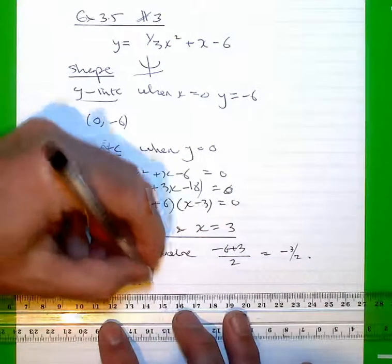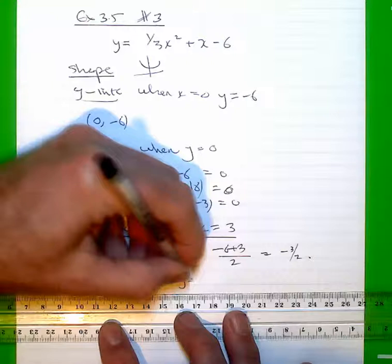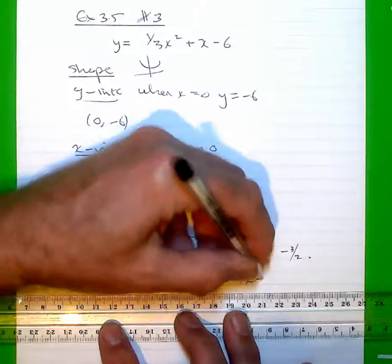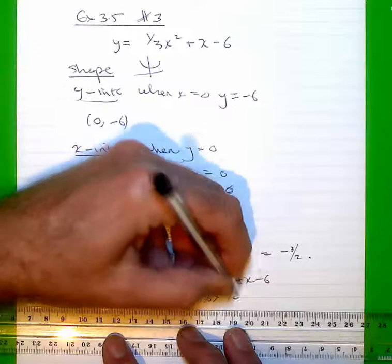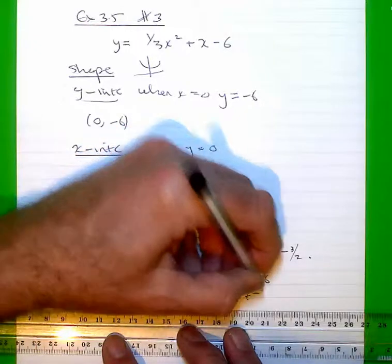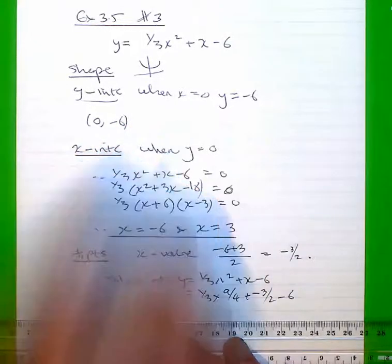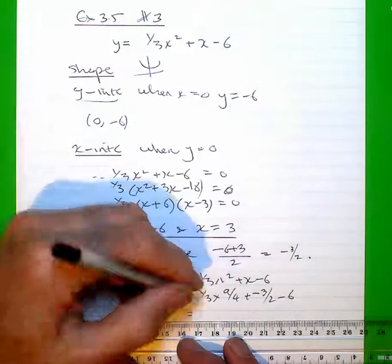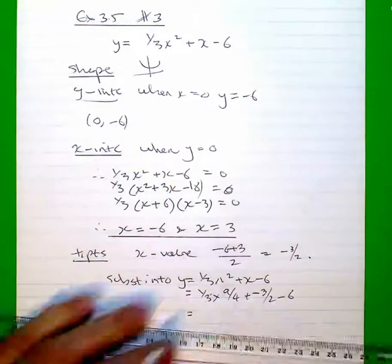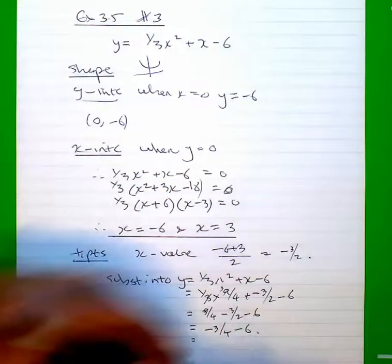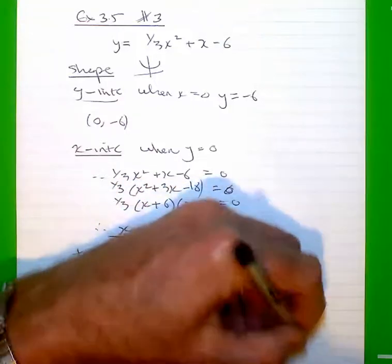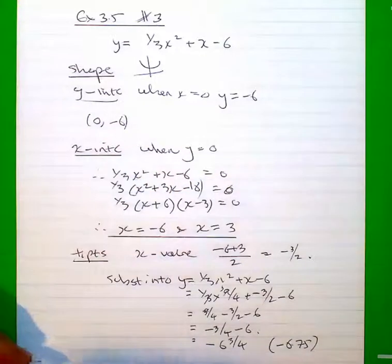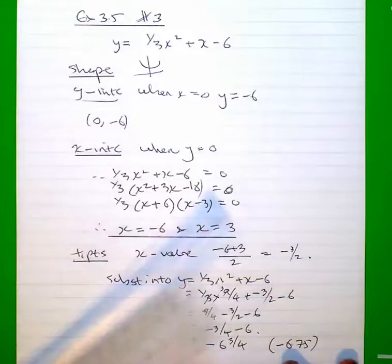When eventually you work that out, that will end up being negative six and three quarters. I'll note in the answer it's negative six point seven five, so I can then graph it on that basis.